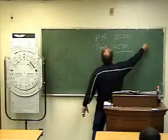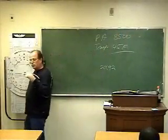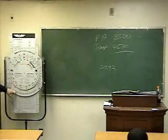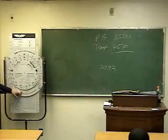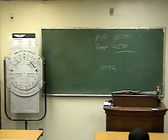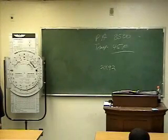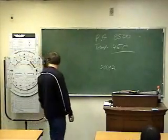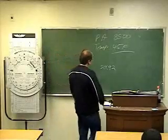So we've got our temperature, got our pressure altitude. Now what we need to do, because density altitude uses Celsius, is convert. Look right down here on the bottom of your flight computer — there's a conversion chart. So 45 degrees Fahrenheit is what in Celsius? About seven.